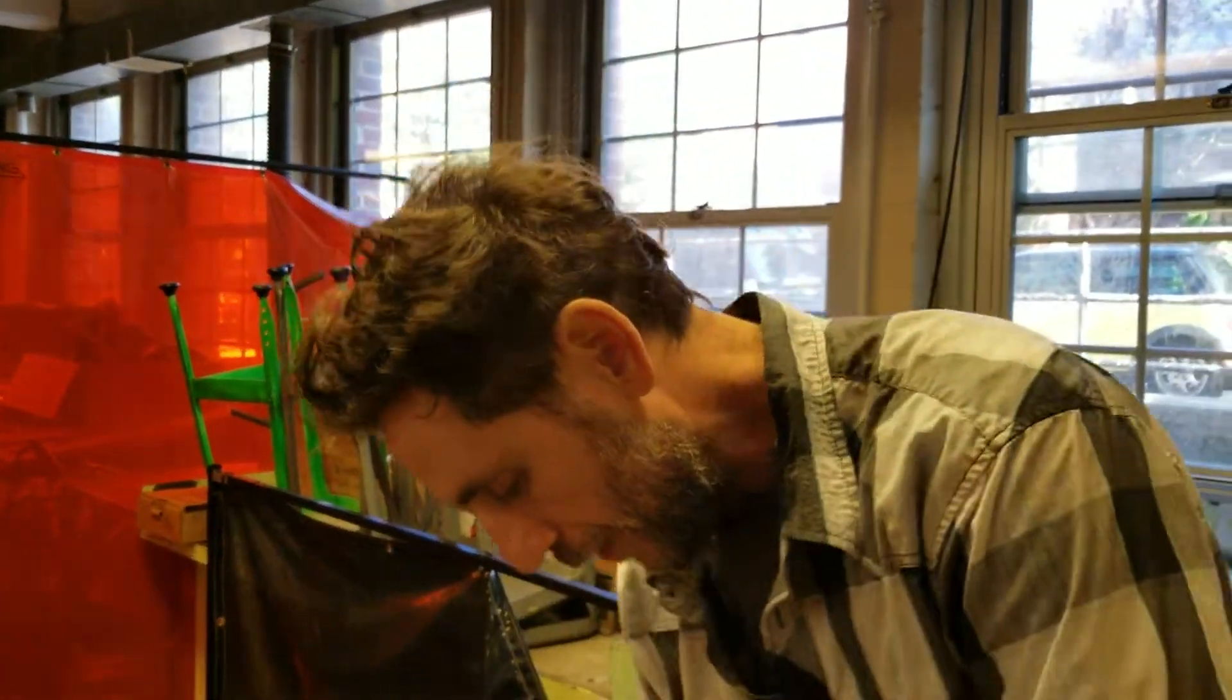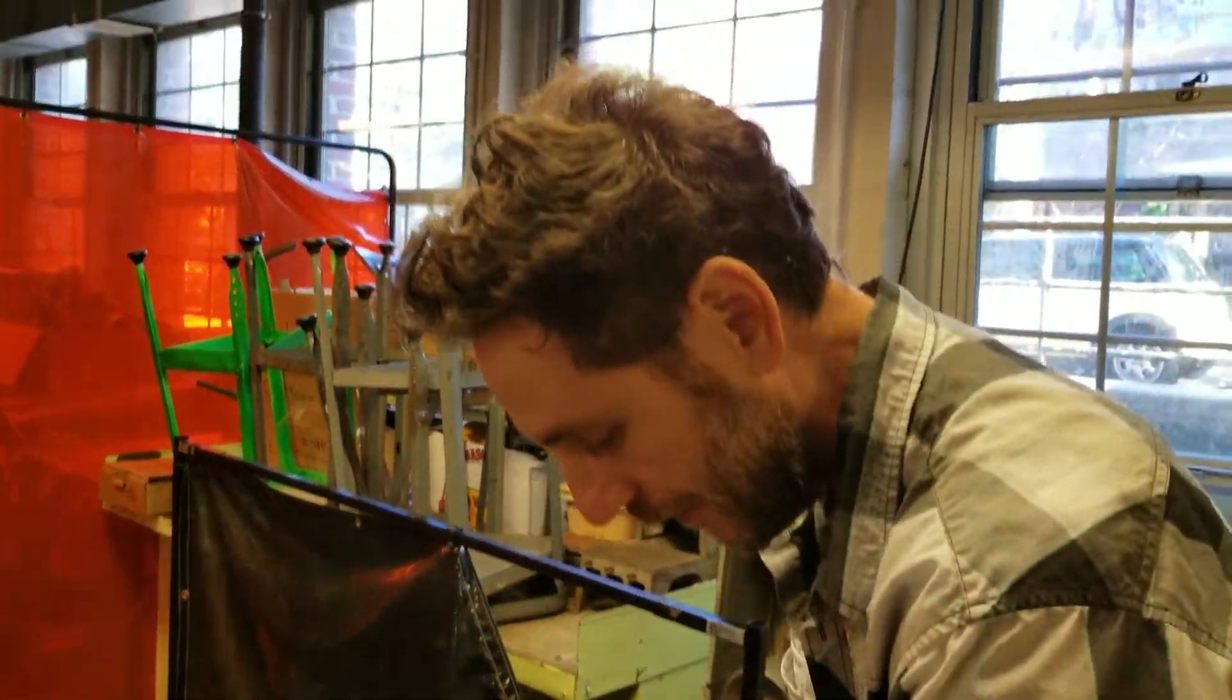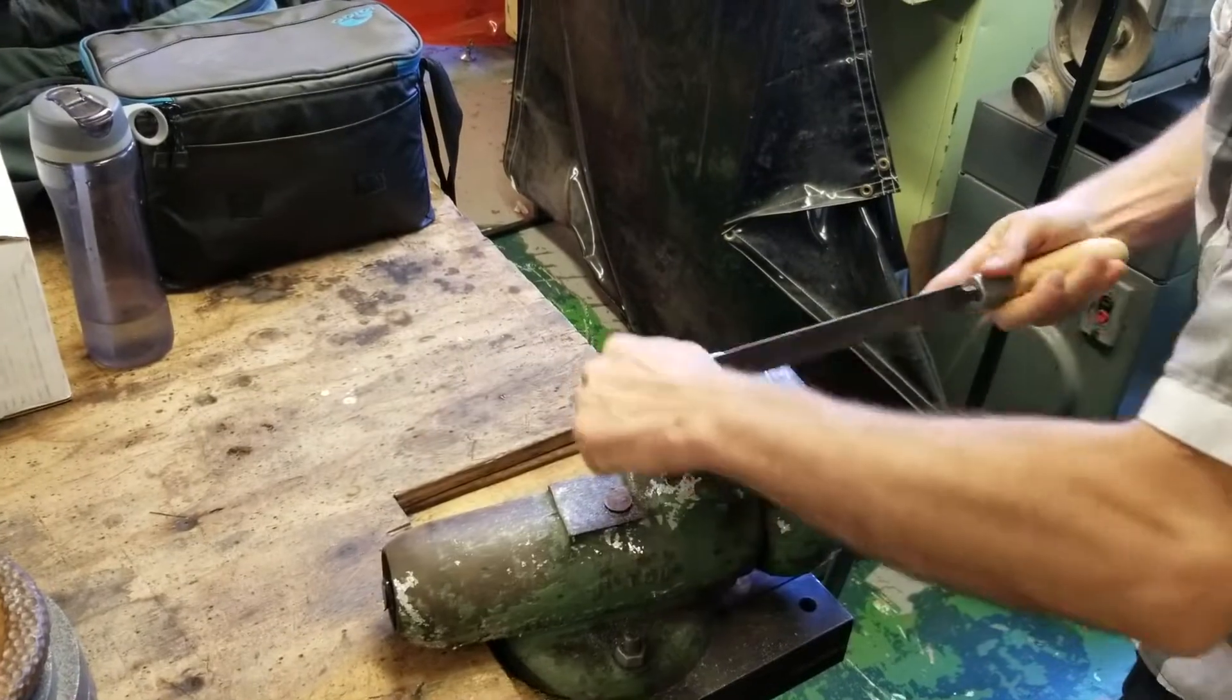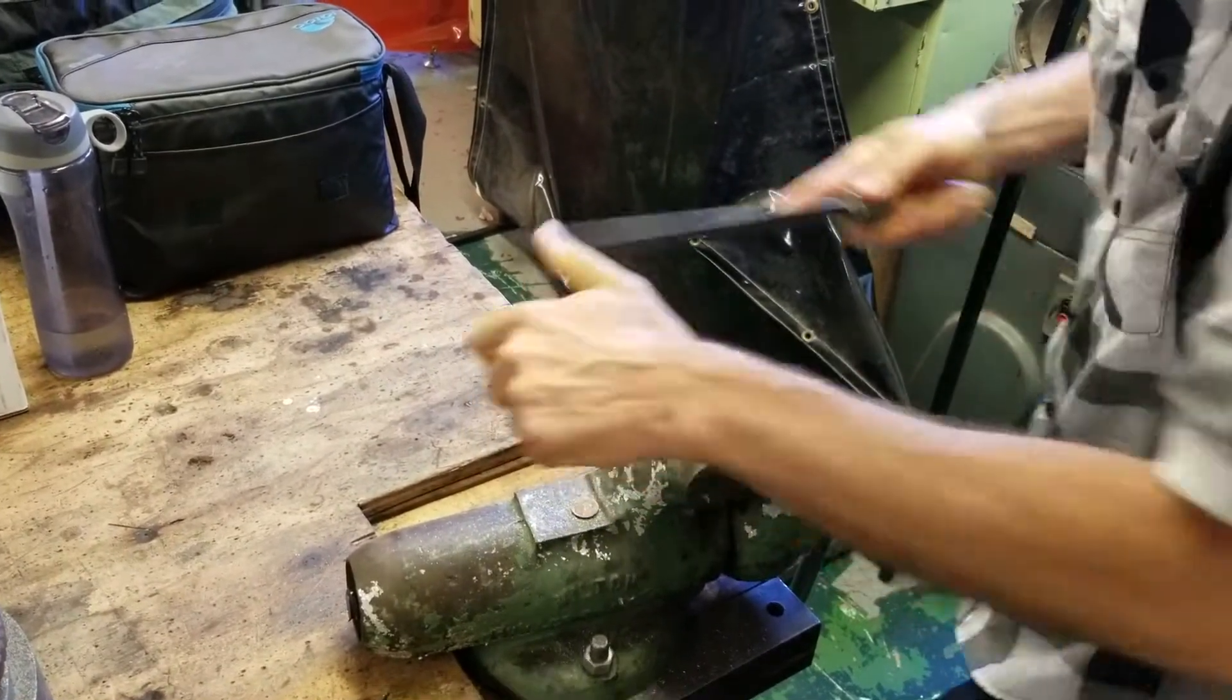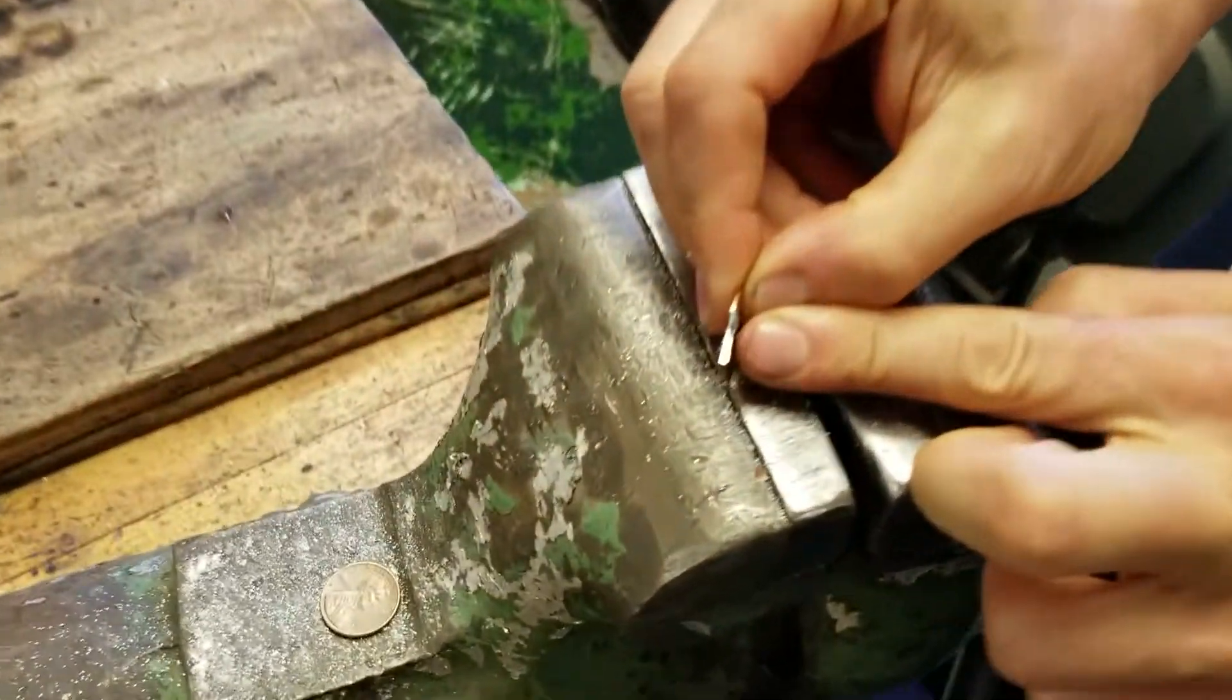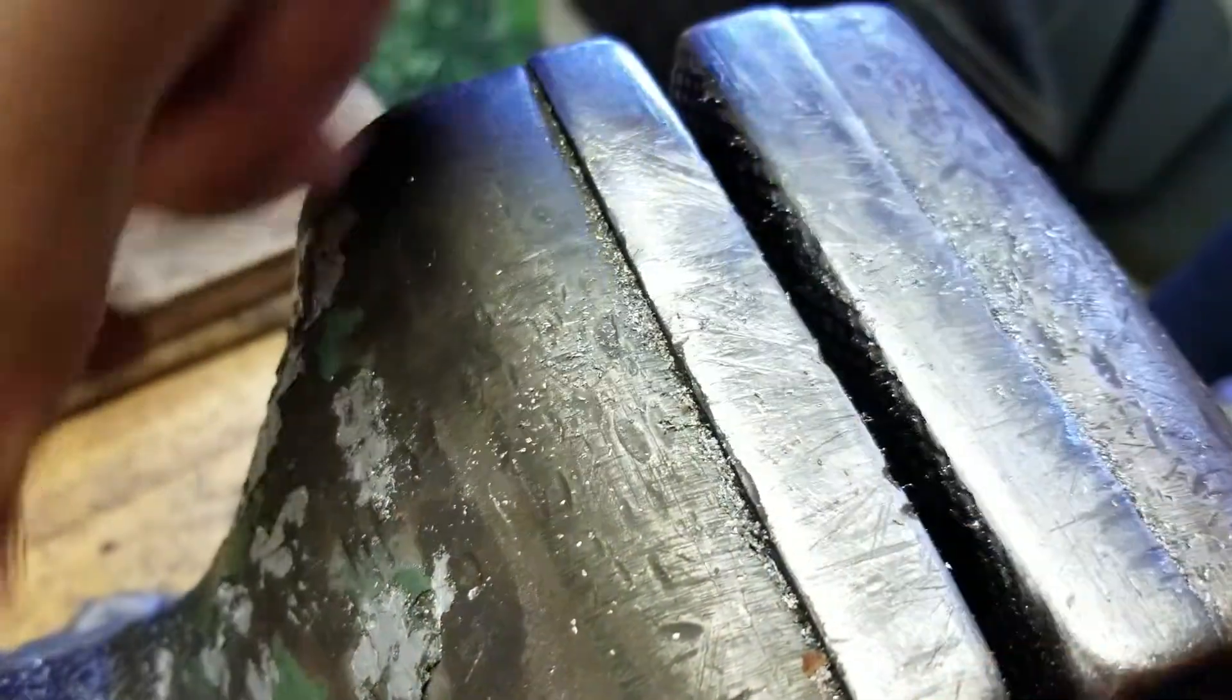Check this out. Inside of a penny, some of them are made out of zinc. Zoom in right here. Take a look. The center is zinc, so it's just copper plated.